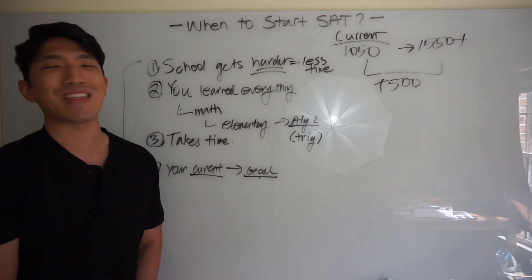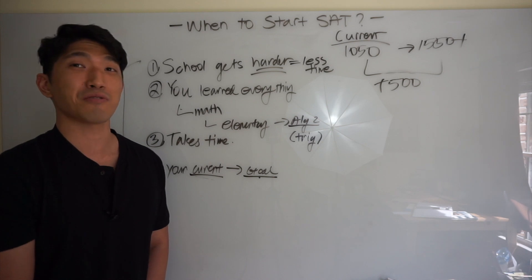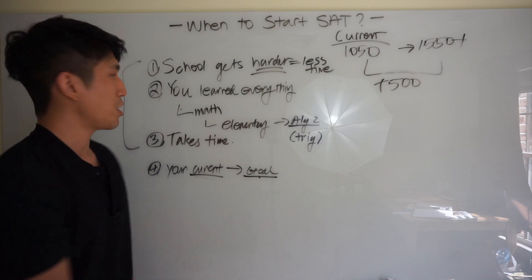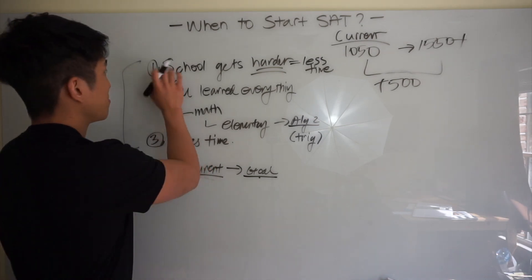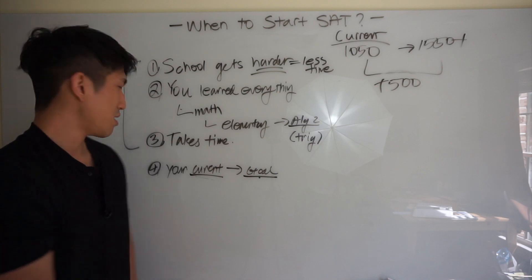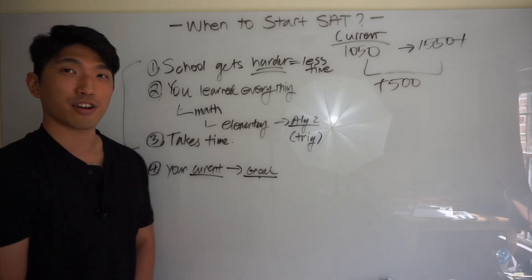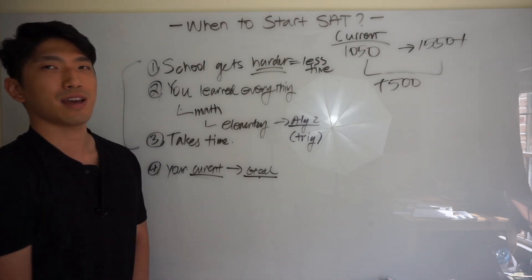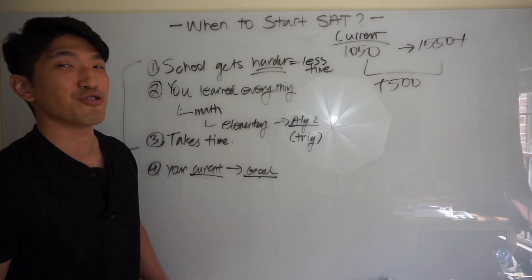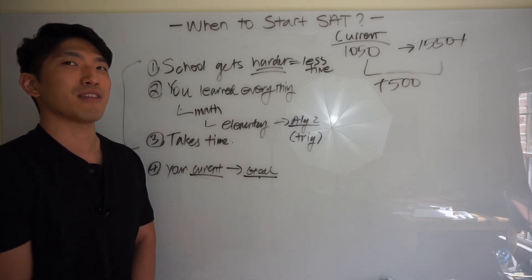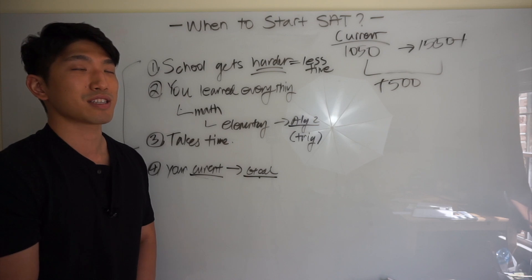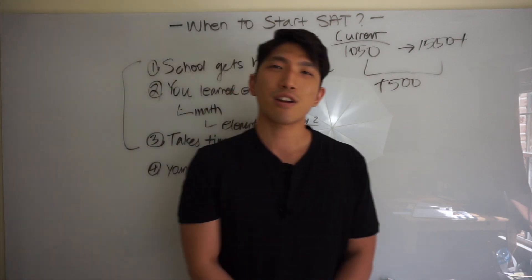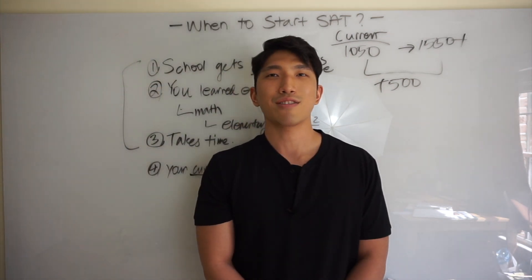Third thing, it takes time. It takes a lot of time, because reading section alone is 65 minutes. And to do that 10 to 15 different times, it's going to take a lot of time. Make sure you start when you have a lot of time, which is freshman sophomore year. Last thing is, identify your current score and your goal. Try to see how much time you're going to need. If the gap is not too big, you can maybe push it off until junior year. But if your gap is pretty big, start early. Those are four things to consider to see when you need to start. I'll see you guys on the next one. Bye.